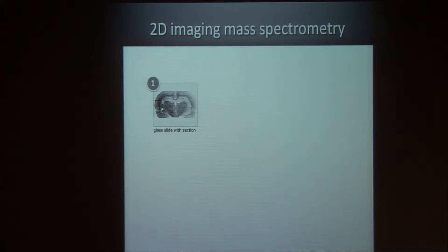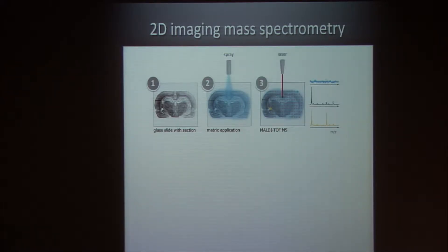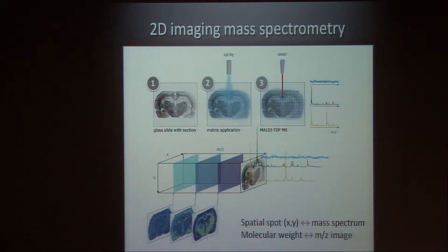What is 2D imaging mass spectrometry? We take a thin tissue section, apply a matrix, and then go in a rasterized way over the section. For each pixel, we acquire one mass spectrum, and one mass spectrum represents the abundance of hundreds of thousands of molecules at that pixel. We can think of this data set as a data cube — if we fix one m/z value, one molecular mass, then we have a map of the abundance of that molecule across the section. This is how imaging mass spectrometry lets you image the spatial abundance of thousands of molecules in one run.